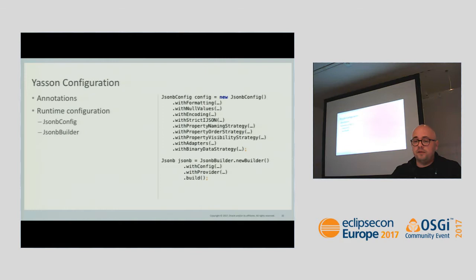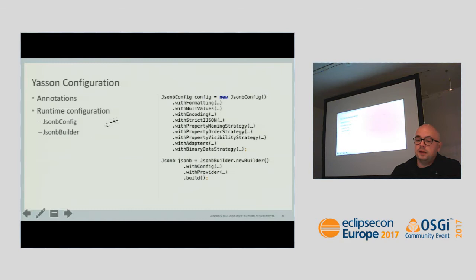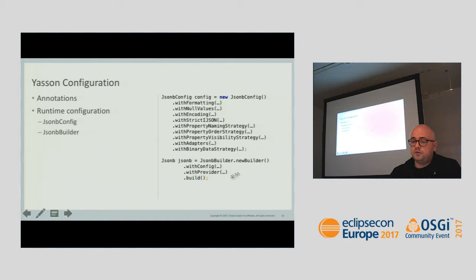We've finished with defaults. Now we're coming to customizations. There are two types: annotations and runtime configuration. Runtime configuration is basically two classes: JsonbConfig and JsonbBuilder. You use JsonbConfig methods to build your configuration, then pass it to the withConfig method of JsonbBuilder to build a customized JSONB engine. There's also a withProvider method if you'd like to use a non-default JSONP implementation.